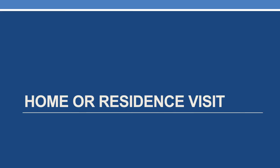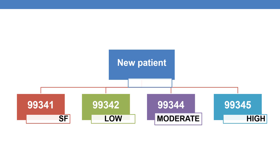Coming to home or residence visits, the CPTs for new patients are 99341, 99342, 99344, and 99345. To report 99341, straightforward MDM is required. To report 99342, low MDM is required. To report 99344, moderate MDM is required. And to report 99345, high complexity MDM is required.